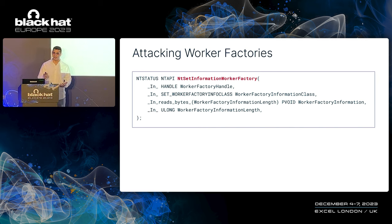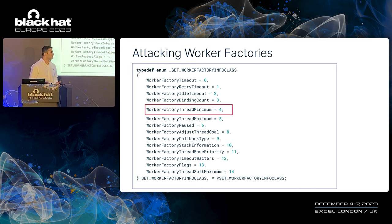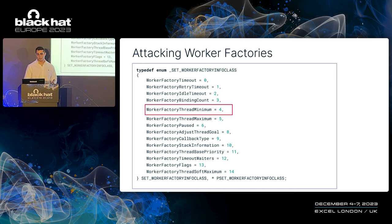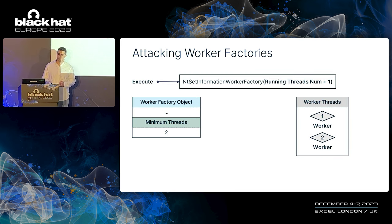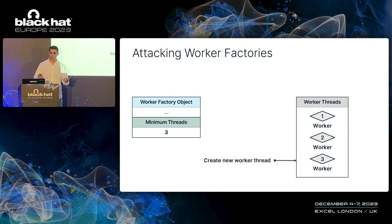The ideal spot to examine is the set system call, allowing us to modify worker factory attributes. The set system call supports a few more information classes than the query system call. The information class that suits our needs best is the worker factory thread minimum, which sets the minimum running worker threads of the worker factory. Having two worker threads currently running, setting the minimum worker threads number to be the current running threads number plus one will essentially result in a new worker thread being created, meaning the start routine will get executed.